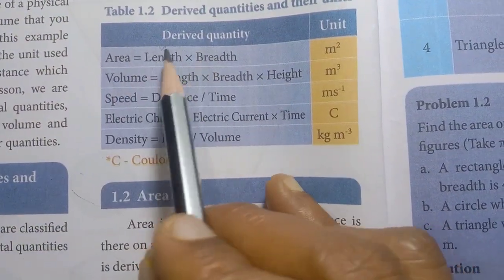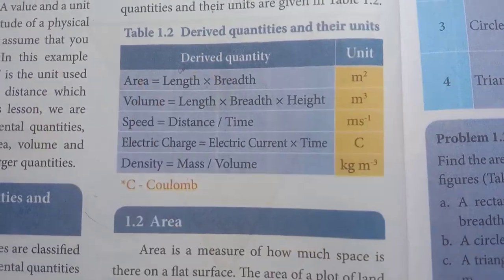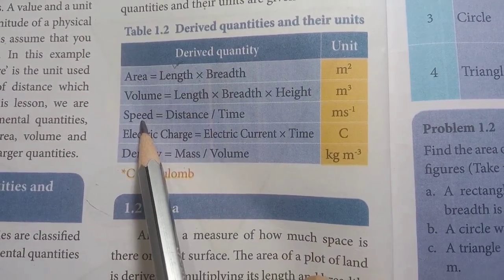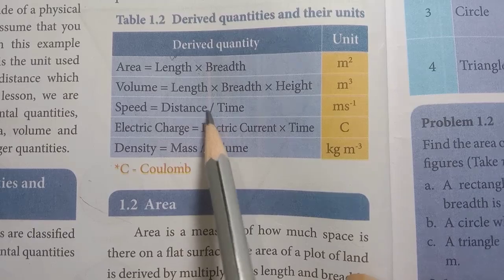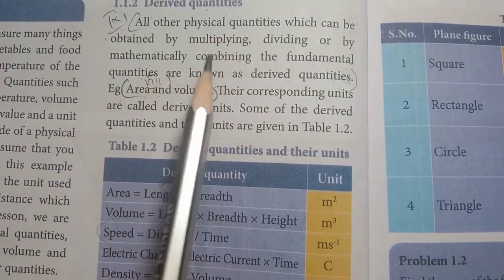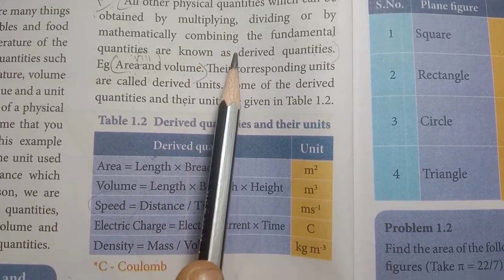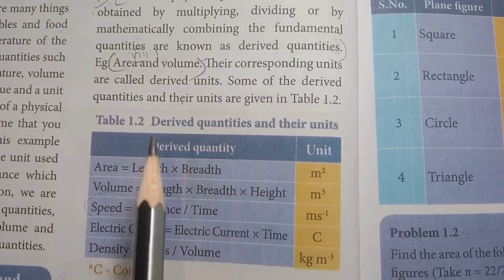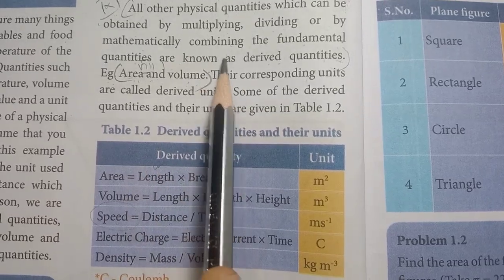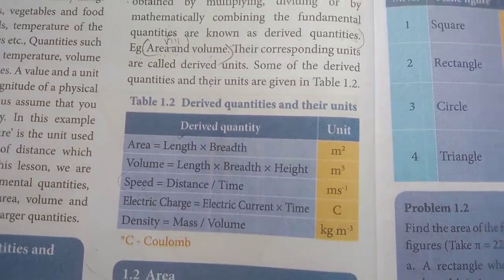Area is derived from length and breadth — multiplying two fundamental quantities gives a derived quantity. So the fundamental quantities multiplied, divided, or mathematically combined give us derived quantities. Examples: area and volume.